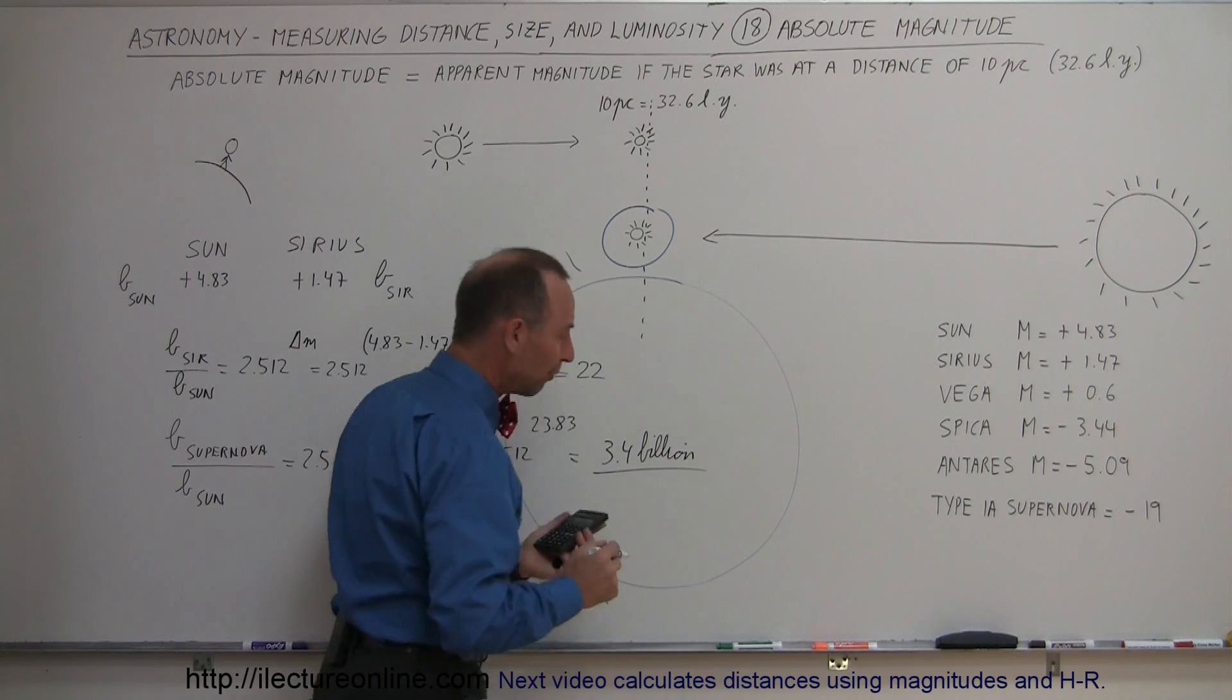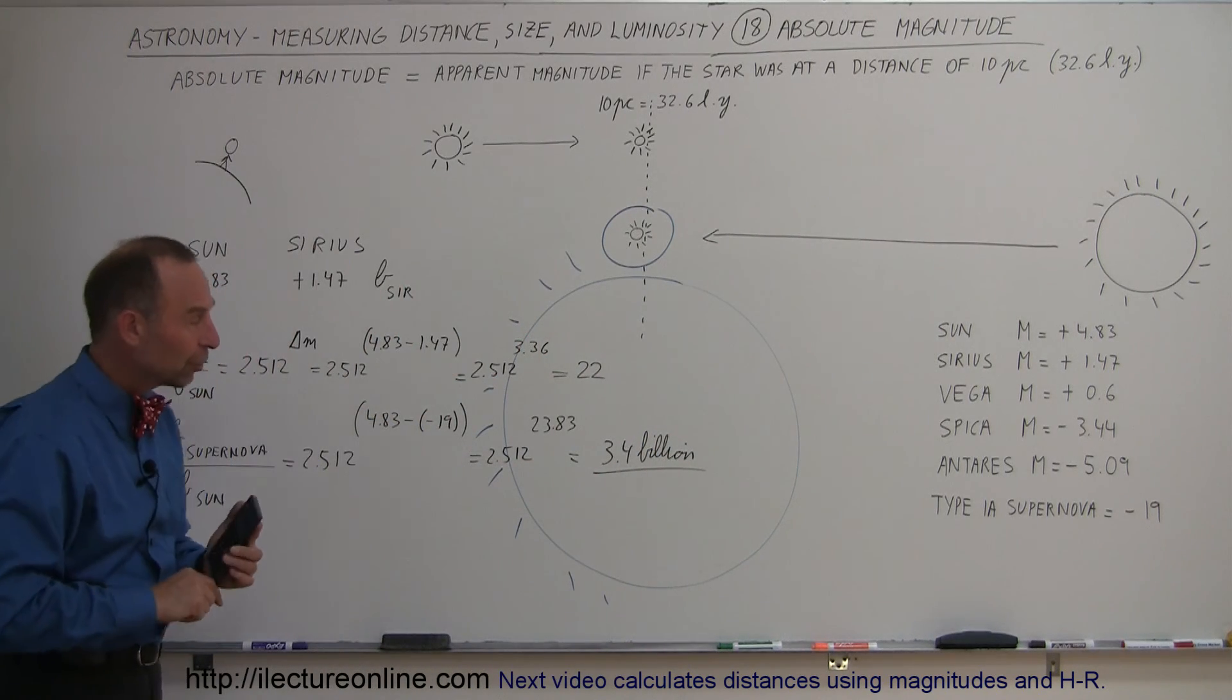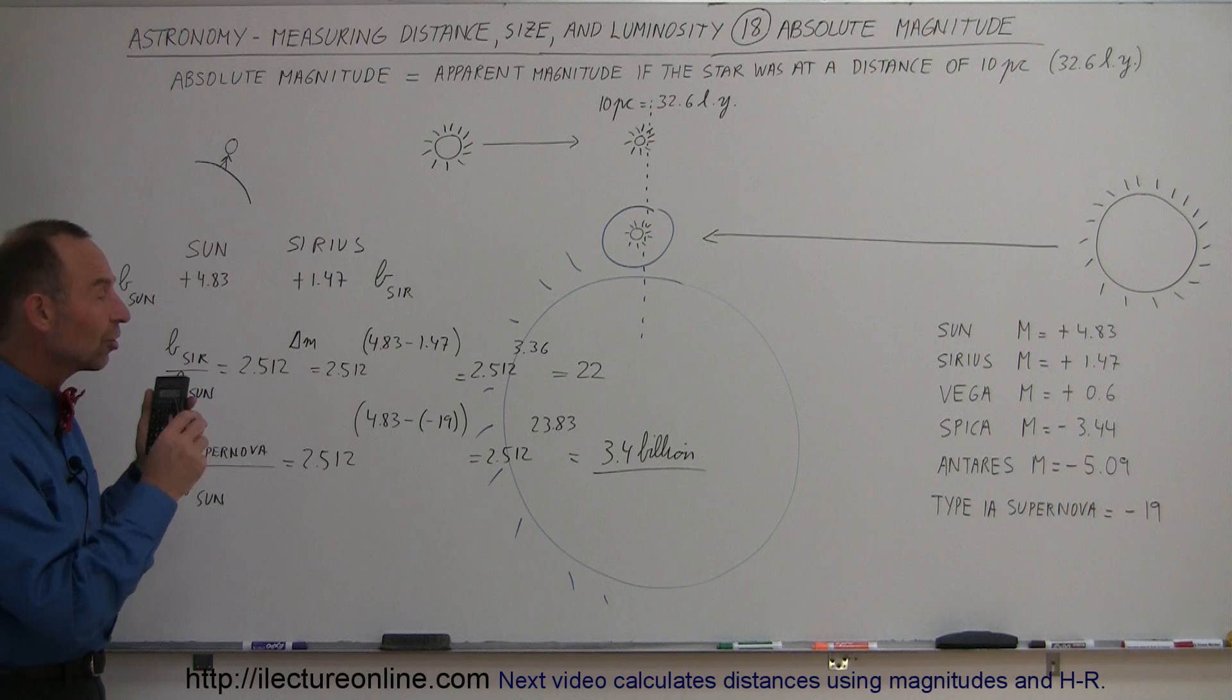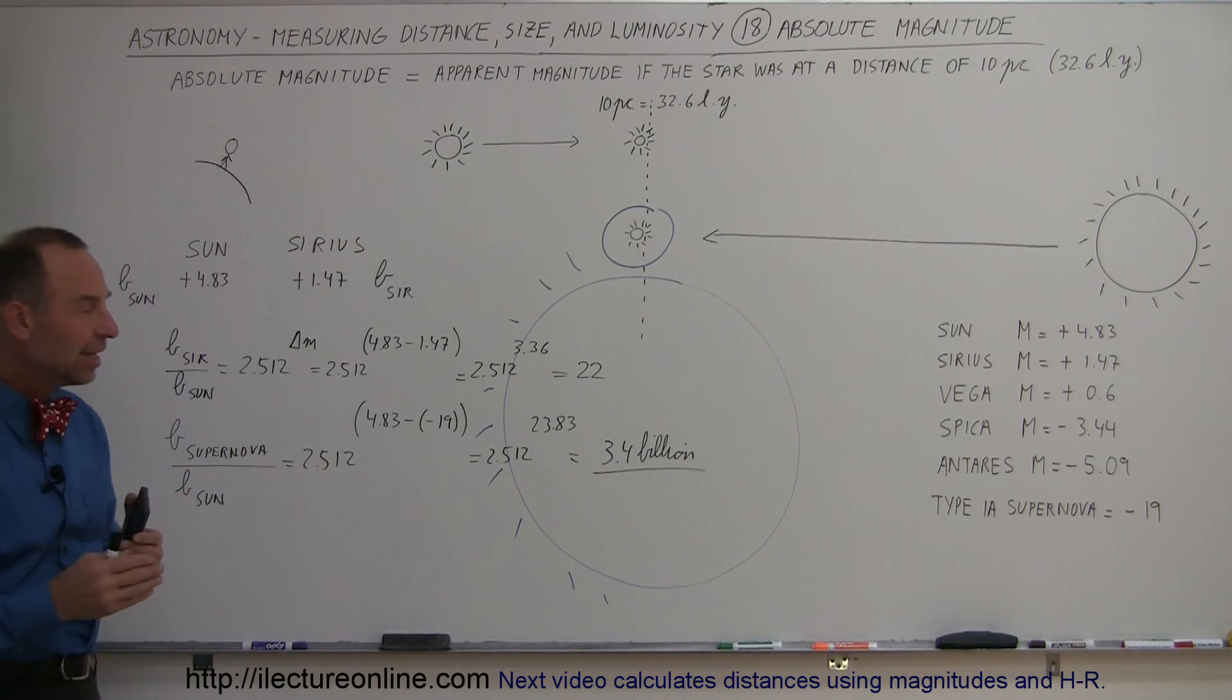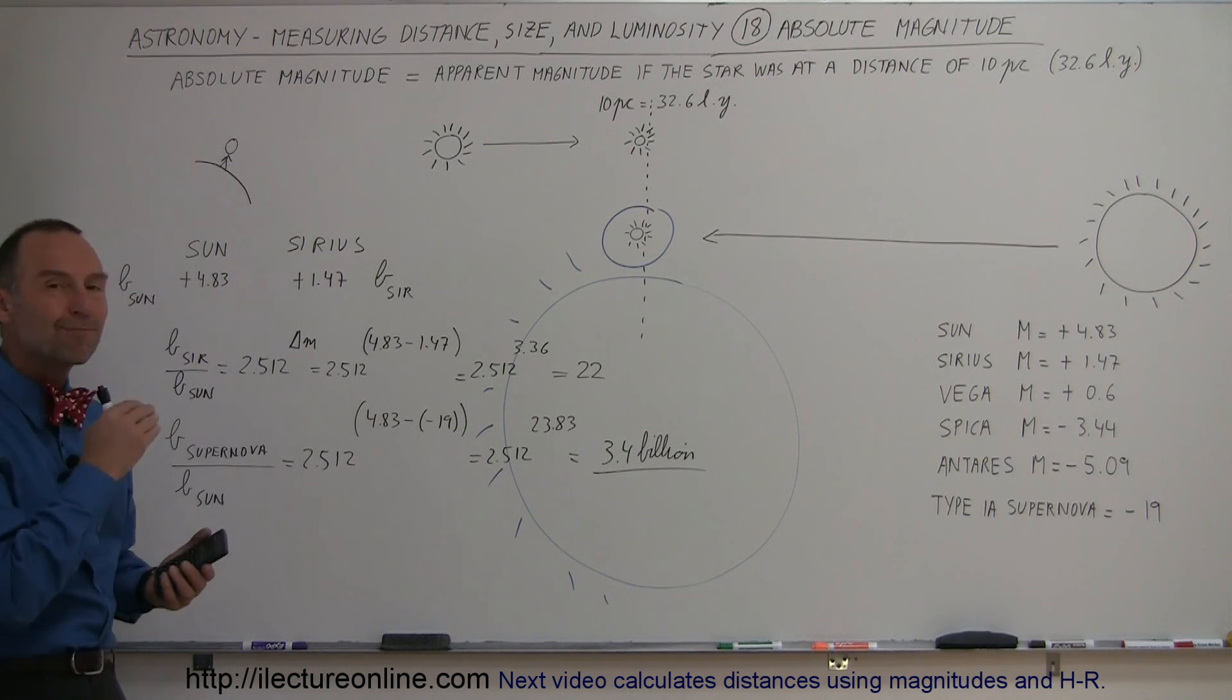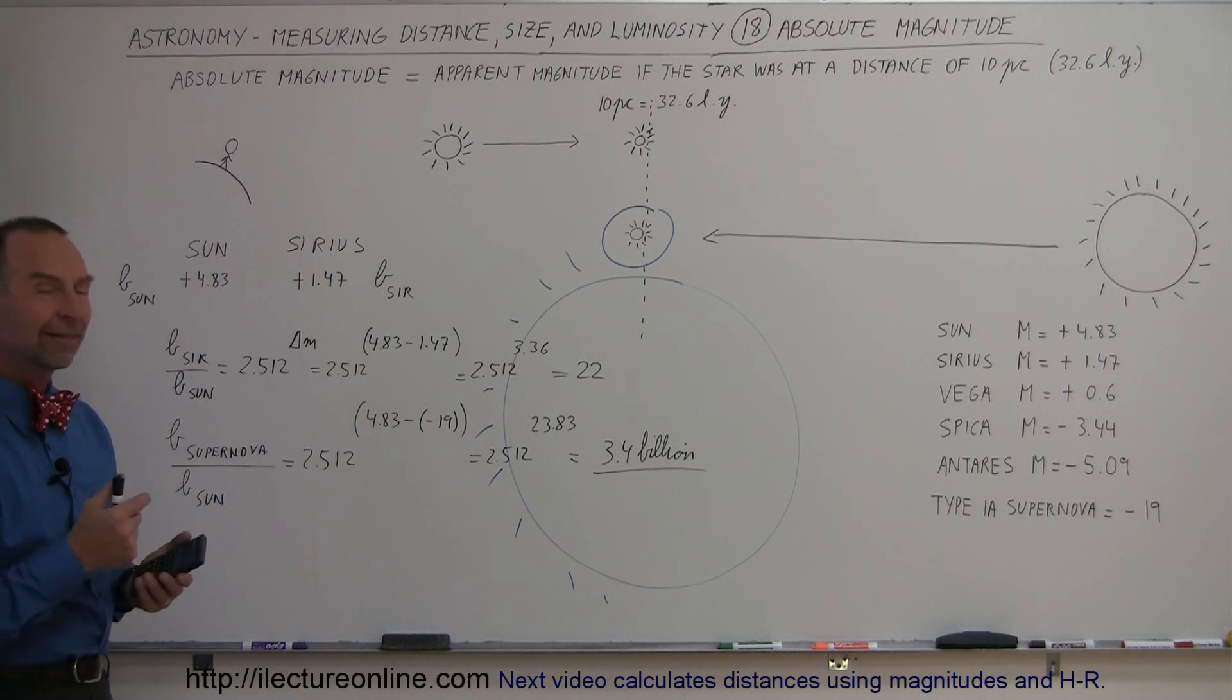So when a supernova explosion occurs, a type 1a supernova explosion, it puts out as much light, as much energy, as 3.4 billion suns. That's absolutely enormous.